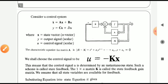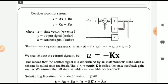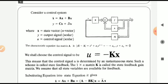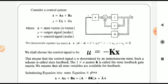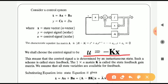In the state feedback controller, the control signal to the system has the form u equal to minus Kx. This is the nature of the control signal applied in a state feedback controller, where x is the state vector and capital K is called the state feedback gain matrix. Its order is 1 by n — it is a row matrix.